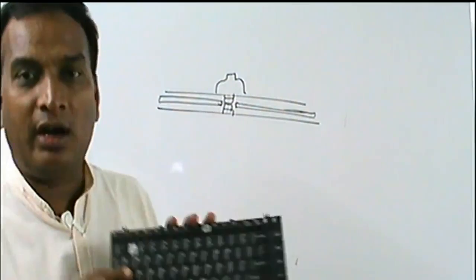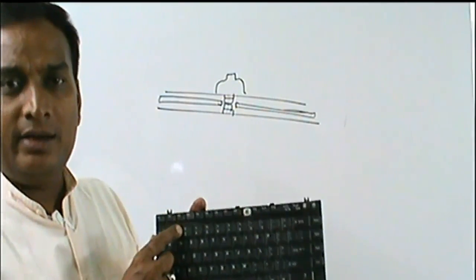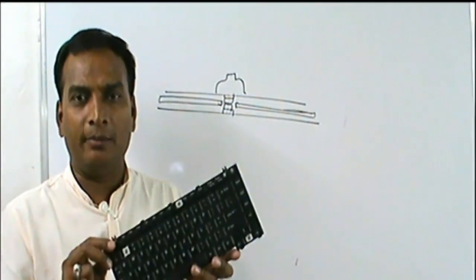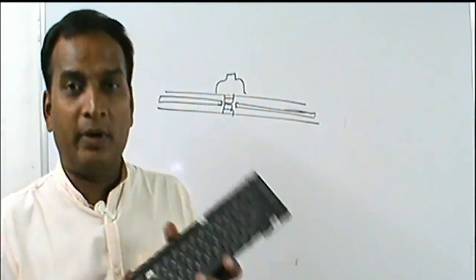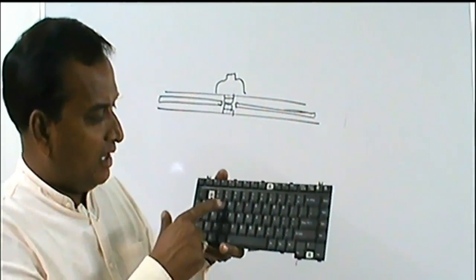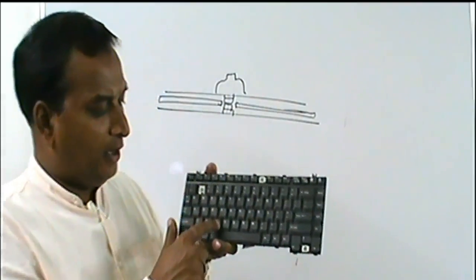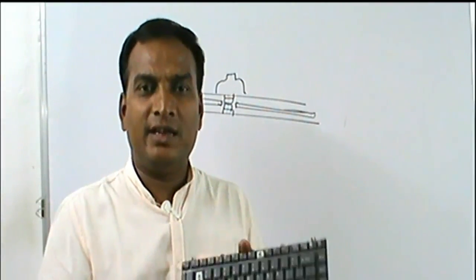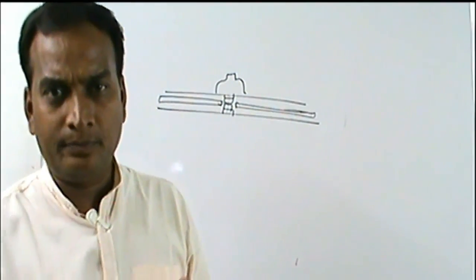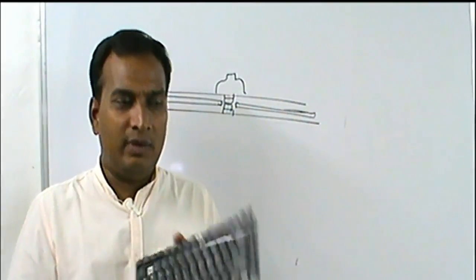If the cable is okay, maybe a row or column line is burned inside that layer, and you also need to replace the keyboard. Third, if you purchase a new keyboard and insert it but the same particular keys are still not working — like 3, E, D, and C — that means the problem is related to your motherboard. In that case, you need to repair your motherboard, and we will look at which components are problematic in our next video.